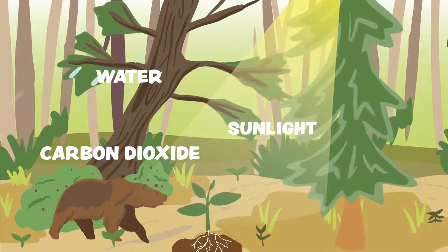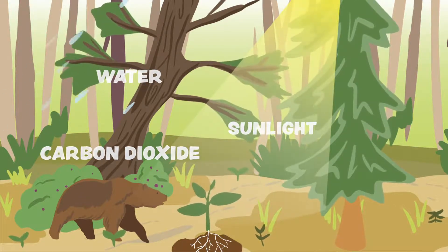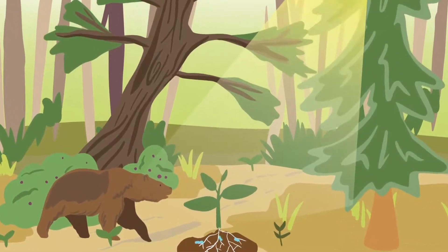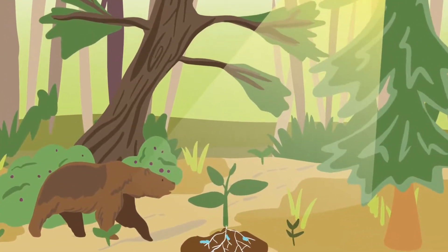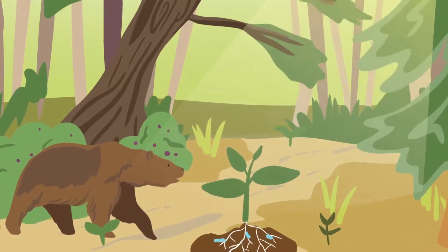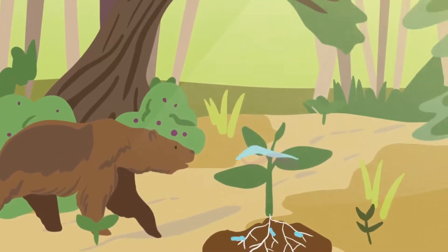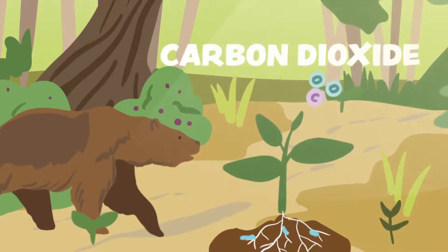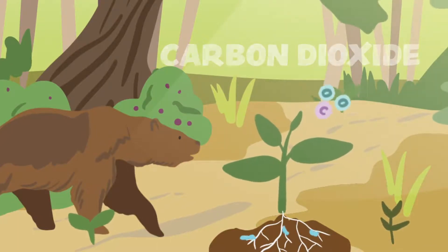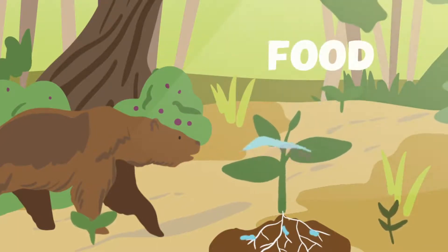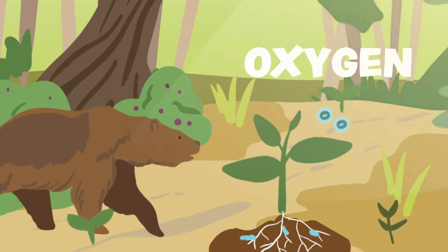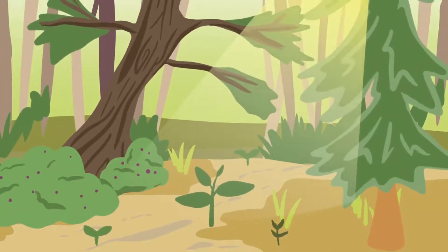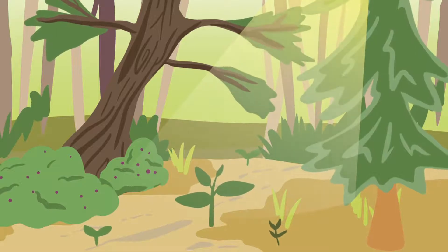Animals and people, like you and me, are breathing out carbon dioxide right now. Plants absorb water through their roots and absorb sunlight and carbon dioxide through their leaves. Plants use the sunlight to turn the carbon dioxide and water into food. During this process, plants release oxygen into the world.